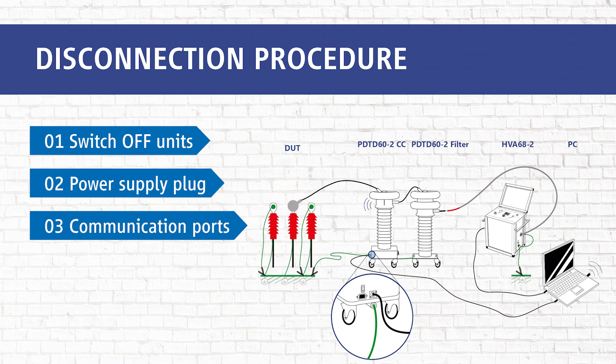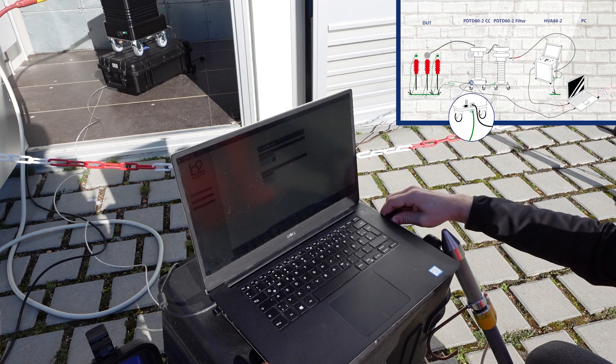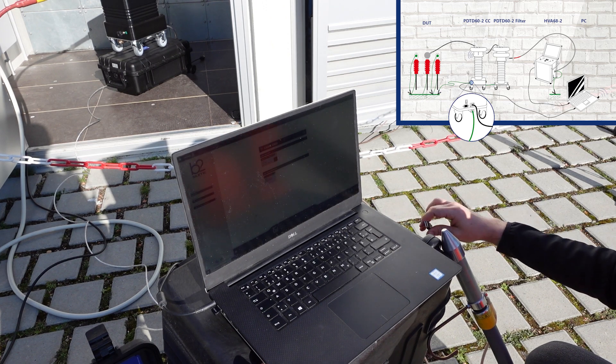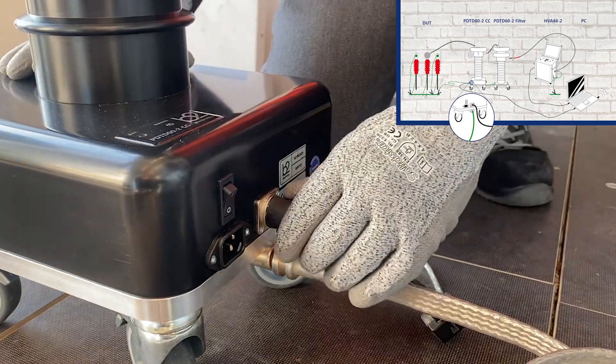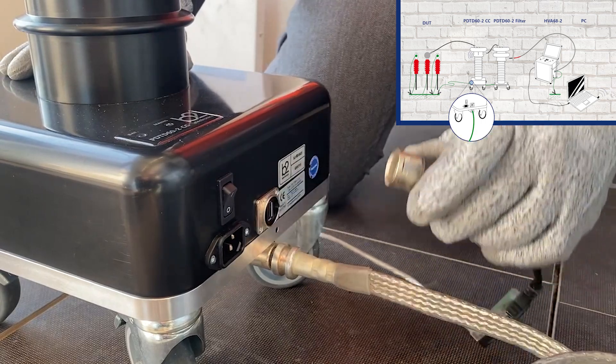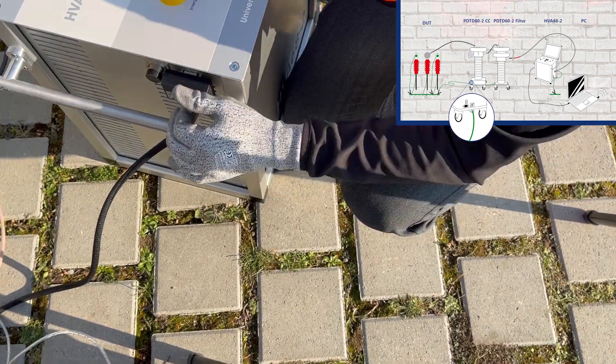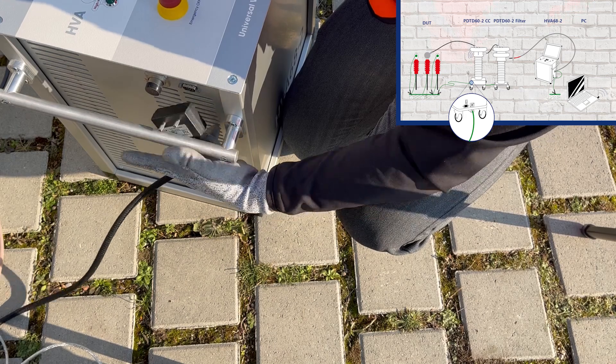Then in the third step we disconnect the communication ports. First we disconnect the USB cable between the PC and the PD2CC, then we disconnect the optoconverter between the PC and the HVA.